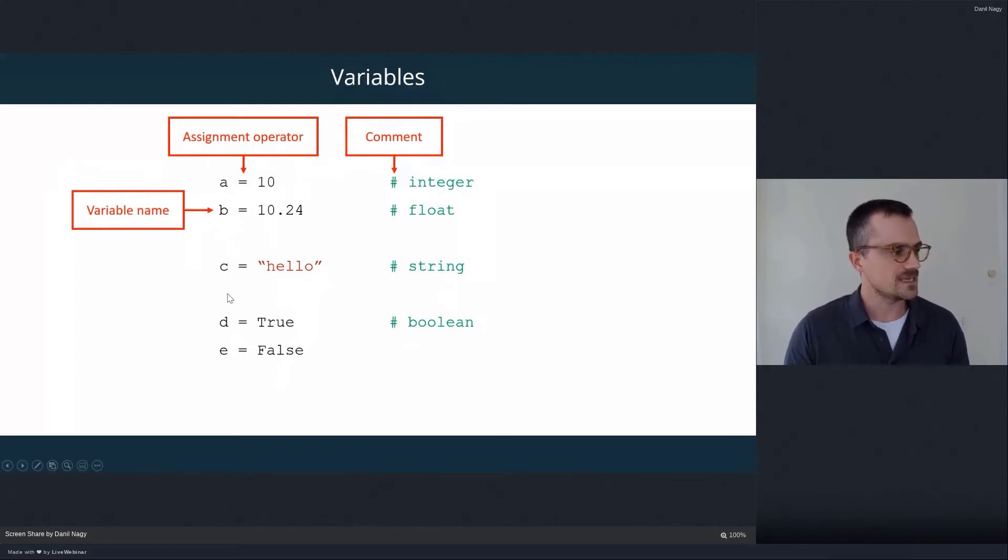So this line of code means that we're storing or assigning 10 to be the value of the variable called a. And here, a, b, c, d, e are just the names of our variable. And again, those can be whatever we want.